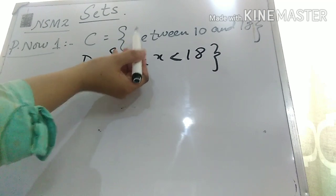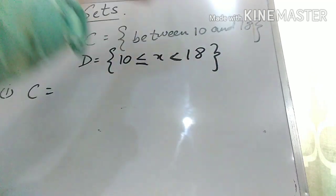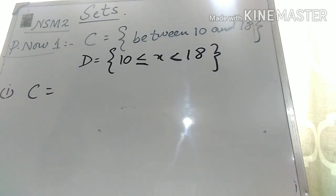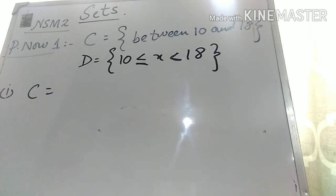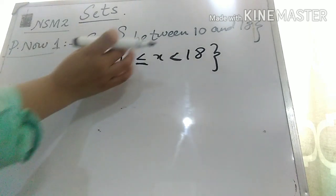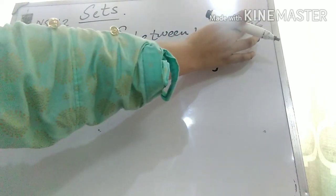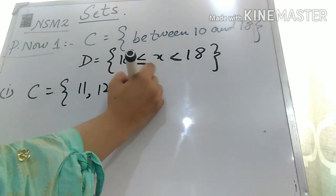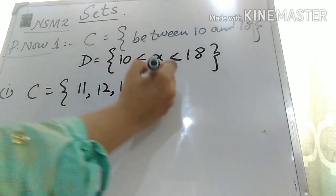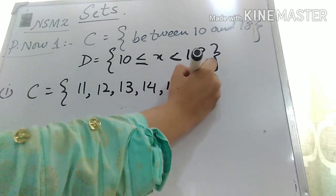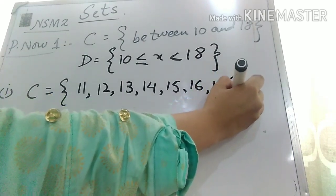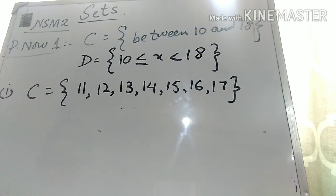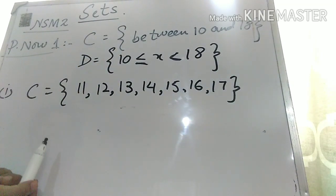For set C, since it says positive integers between 10 and 18, the word 'between' means 10 and 18 are not included. You write the integers which are in between: 11, 12, 13, 14, 15, 16, and 17. So these are the integers between 10 and 18.